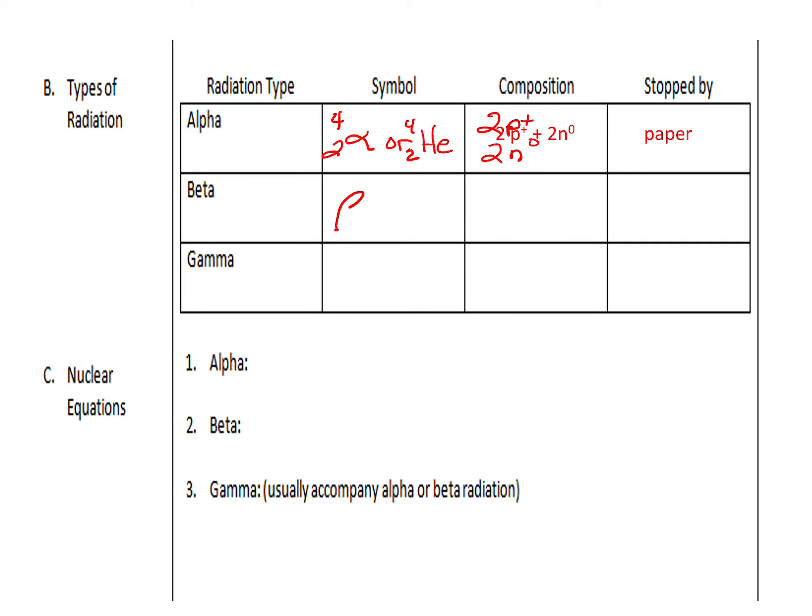A beta particle, the symbol for a beta particle often looks like the symbol beta. And then it's a 0 for mass, and it's a minus 1. So think about what subatomic particle has a mass of 0 and a charge of minus 1. So the composition of a beta particle is actually an electron, even though that's not in the nucleus. And a beta particle can be stopped by aluminum foil.